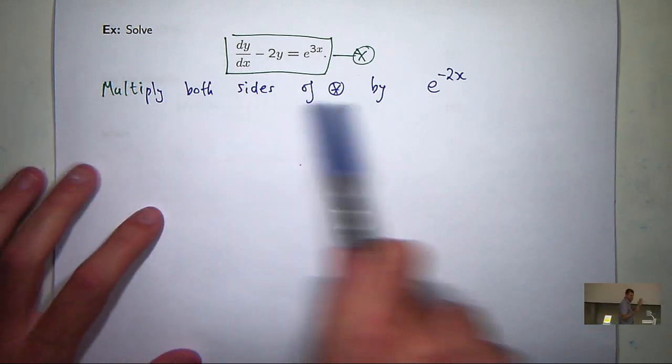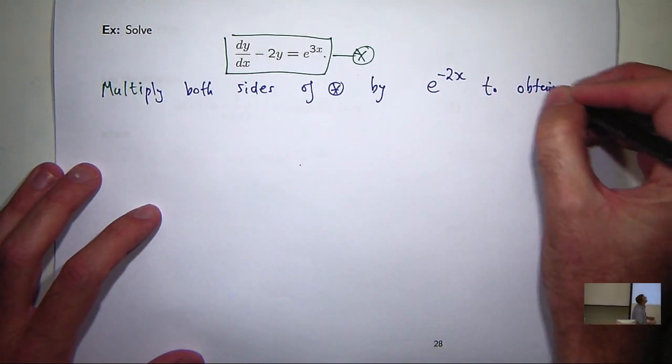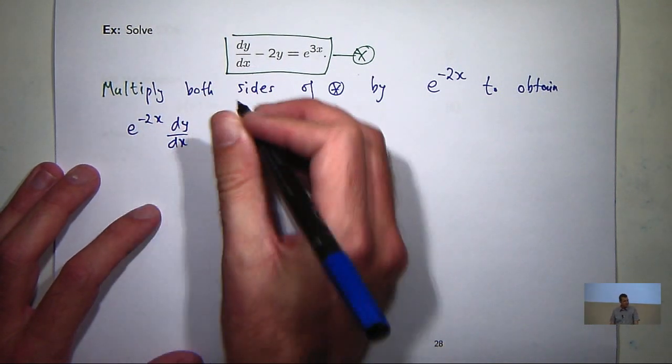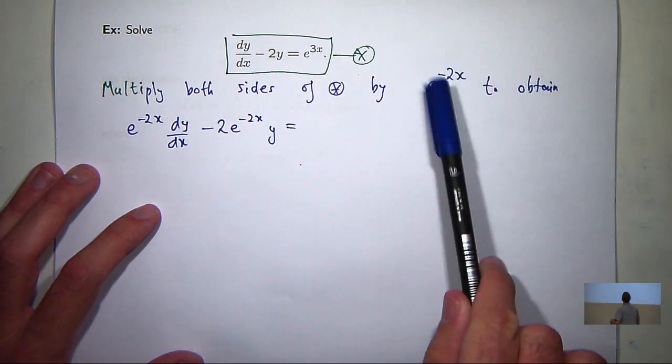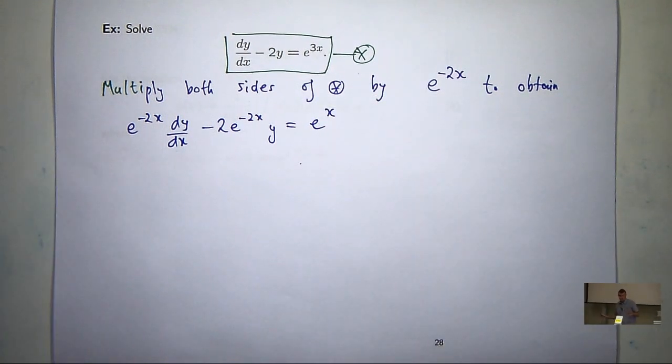So I multiply both sides by e to the minus 2x to obtain the following. Now, if I multiply this by the right-hand side, I'm just going to get e to the x. Now you may be looking at this and going, oh come on Chris, that guy said you're a good teacher. You've made it more complicated. What's going on? I don't believe him.